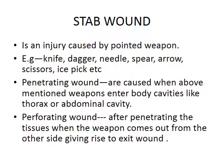What are the different types of stab wound? It can be a penetrating wound or a perforating wound. A penetrating wound is caused when the weapon enters the body cavities like the thorax or abdominal cavity. A perforating wound is when, after penetrating the tissues, the weapon comes out from the other side giving rise to an exit wound. Whenever there is a wound of entry and a wound of exit, it is a stab wound — and always keep in mind the wound of entry is bigger in size compared to the wound of exit.